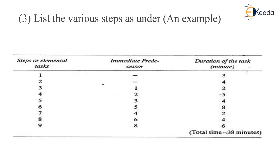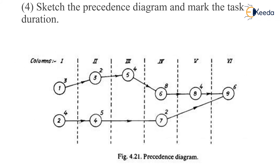Adding 3, 4, 2, 5, 4, 8, 2, 4, 6 we get the total time to be 38 minutes. Hence the total work can be completed in a minimum of 38 minutes. When we draw the precedence diagram we get the items arranged as 1, 3, 5, 6, 8, 9 and 2, 4, 7.